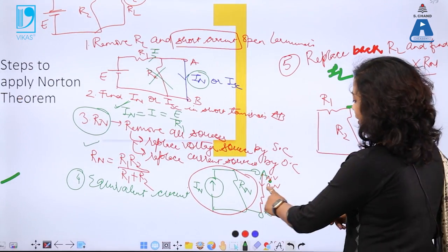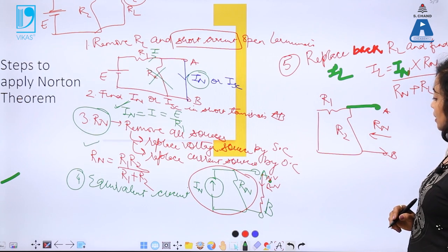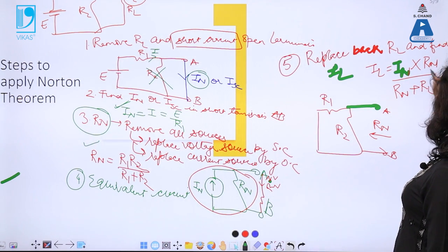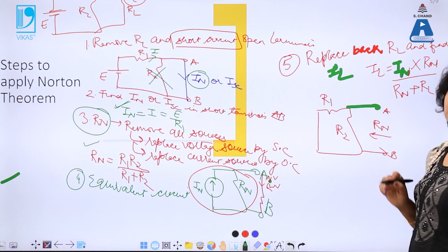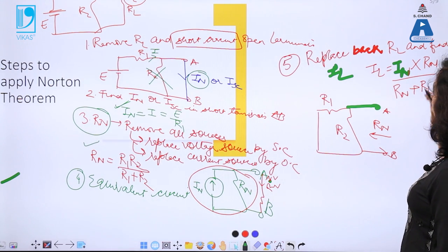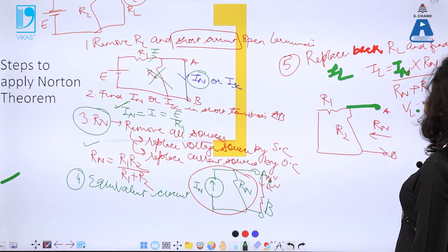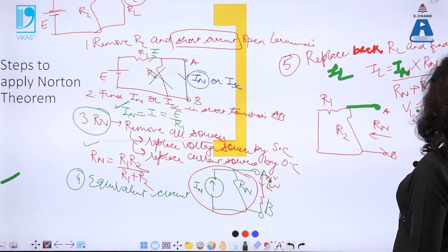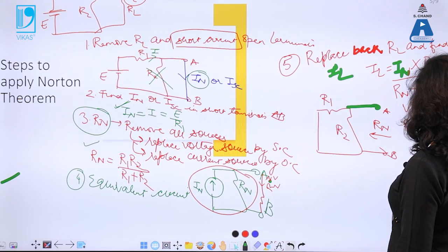Using the current division rule, I can find out current in R_L — which is the total input current multiplied by the resistance of the other branch, divided by the sum of resistances in parallel. This gives me I_L. I can also find V_L = I_L × R_L, and power = I_L² × R_L.